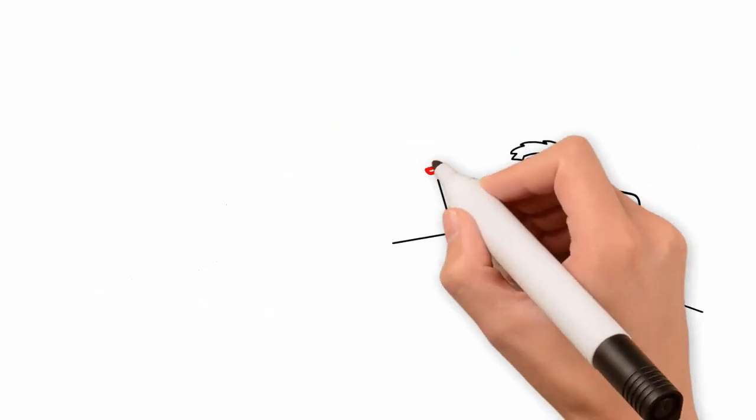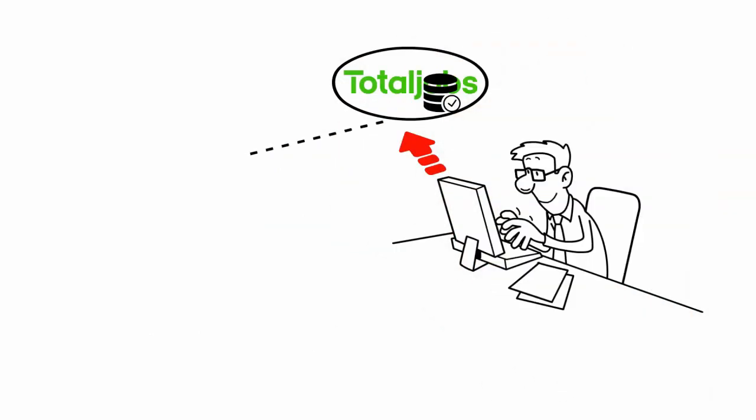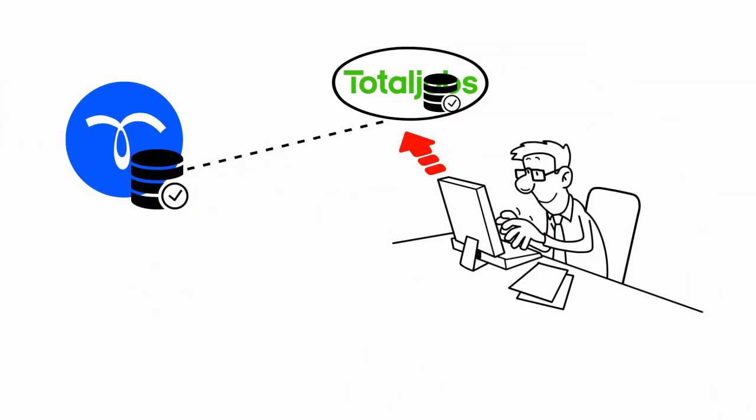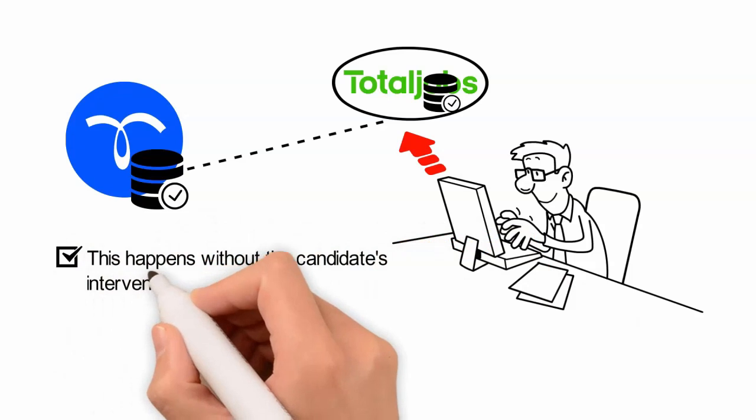First, a candidate applies for your job on TotalJobs.com. Then TotalJobs.com servers talk to our servers and push the candidate data over. All of this happens behind the scenes without the candidate's intervention.